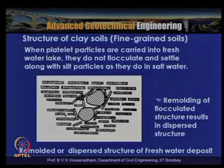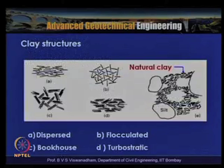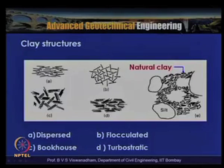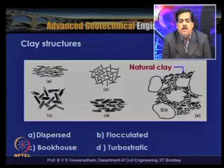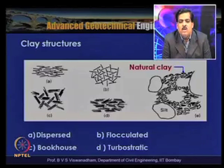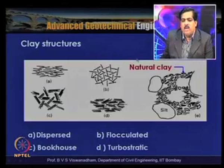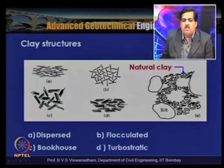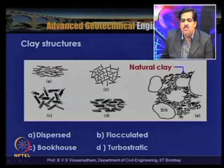The remolded or dispersed structure of a freshwater deposit is shown. Typical clay structures shown include dispersed and flocculated, as well as bookhouse structures where several particles are attracted to each other in a manner similar to a flocculated structure. Turbostratic clay structures are also described. A natural clay structure is shown schematically with large silt particles, flocculation, and visible voids in the particle arrangement.